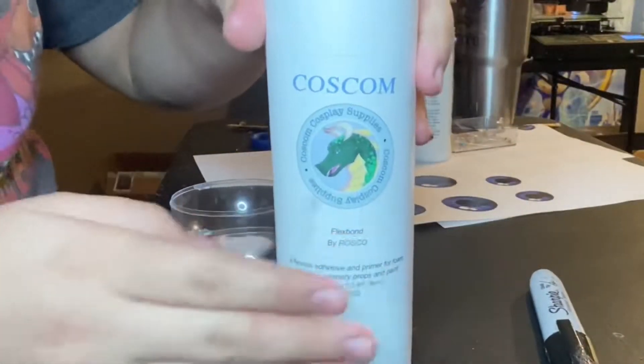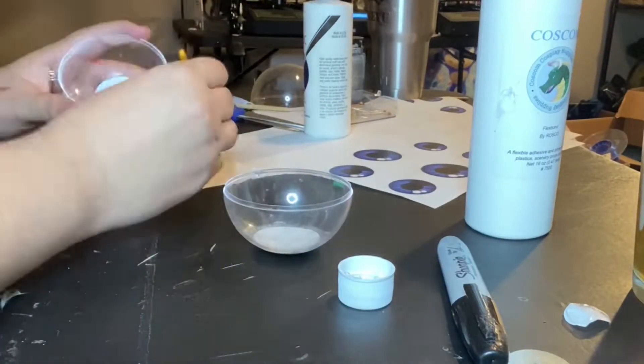As you can see, I'm using some Flex Bond from Cosform Cosplay Supplies to seal the pupils in there.